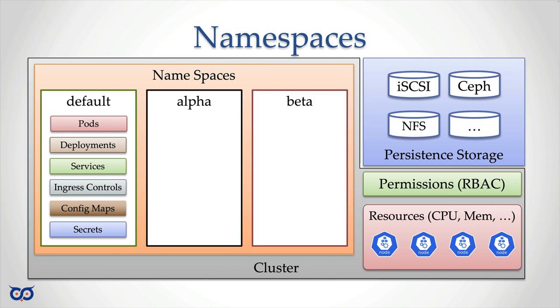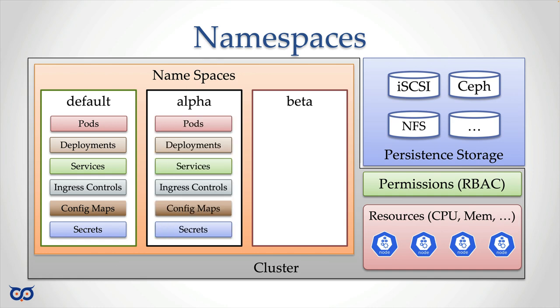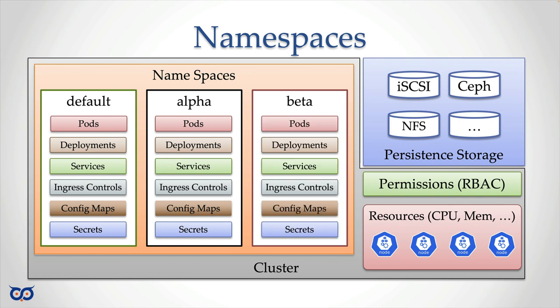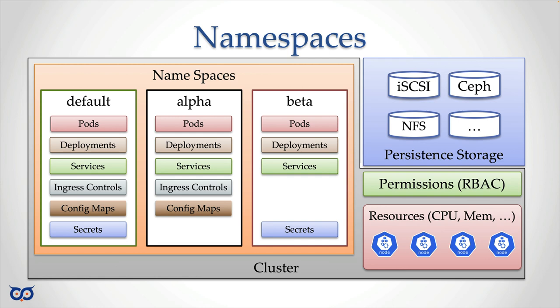You can create namespaces at will — for example, an alpha namespace or a beta namespace. Resources in different namespaces can have the same name, since names only need to be unique within a namespace, not across namespaces. Each namespace doesn't have to have the same resources either — if your beta namespace doesn't need a configmap or ingress controller, you wouldn't create it there. That's all there is to illustrate what namespaces are.